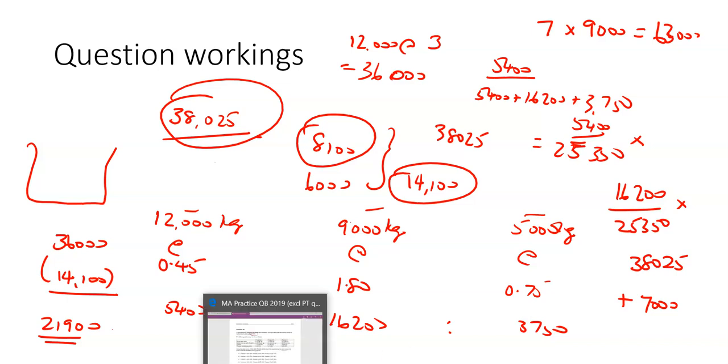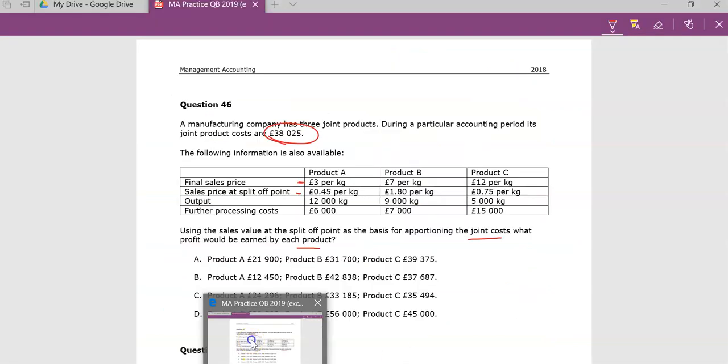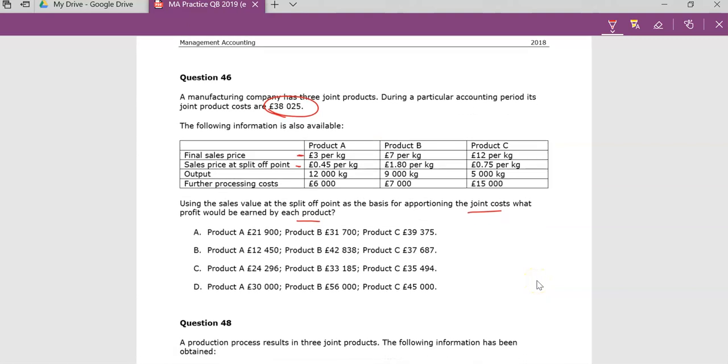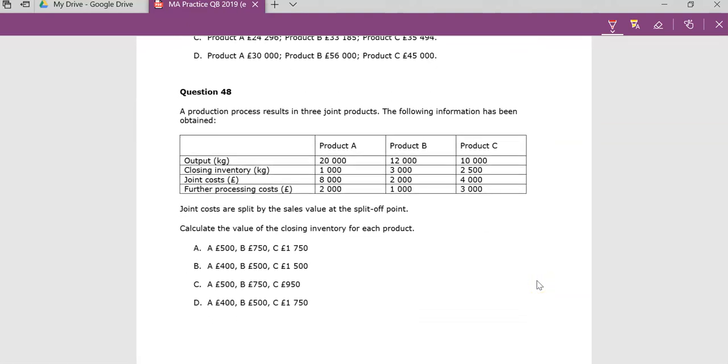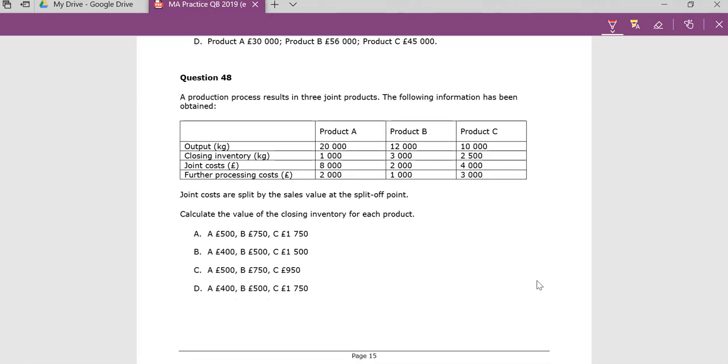Okay, question 48 really is the sort of the last bit of this area that you can get asked about. We've talked about the actual making of the product, the process of making the product, but now they're asking about the closing inventory for each. So I'll focus again, maybe on A and B actually.